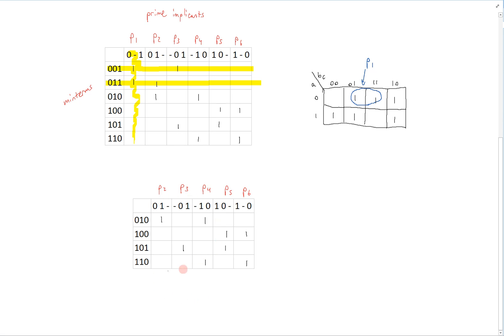Now our implicant table looks like this. And here we can actually see some useful relationships. We can see that P4 column dominates column P2, and we can see that P5 dominates column P3. So therefore, we can get rid of columns P2 and P3. So this again simplifies our table.